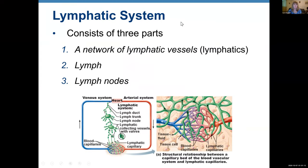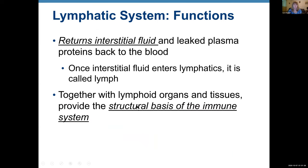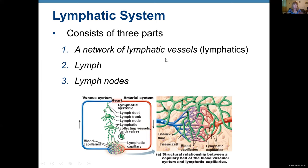The lymphatic system consists of three parts: lymphatic vessels — called lymphatics — lymph, and lymph nodes. Lymph nodes are the simplest lymphatic organ, but we have other lymphatic organs as well. So I would say it's a network of lymphatic vessels, lymph, and lymphatic organs that include lymph nodes.